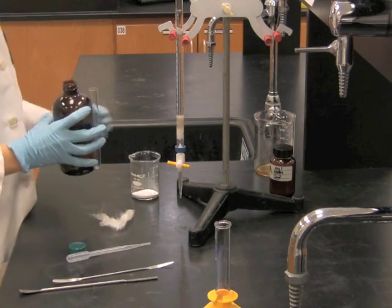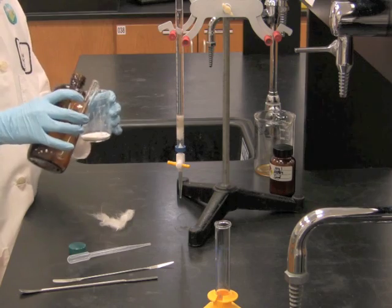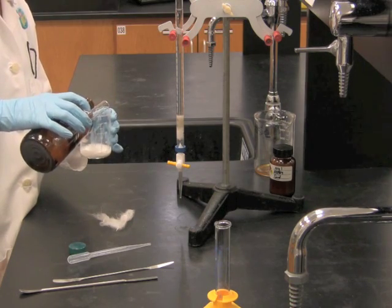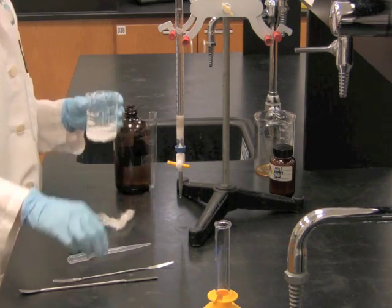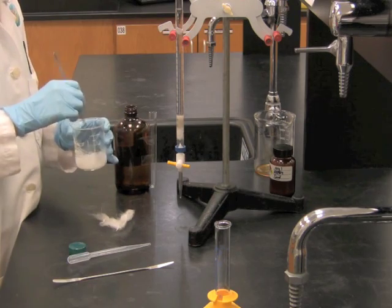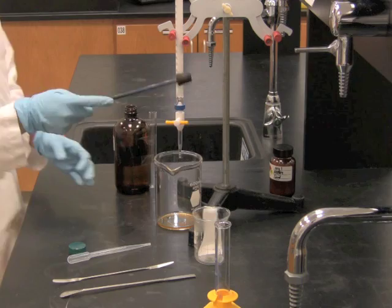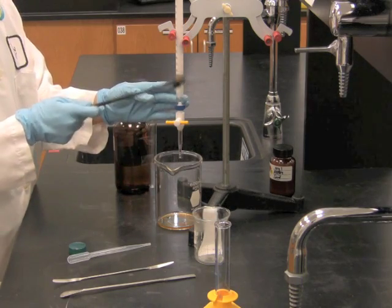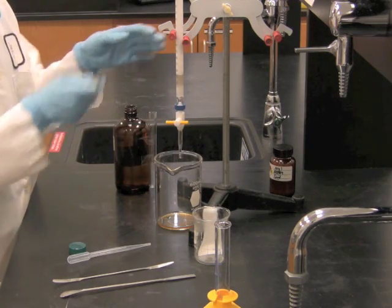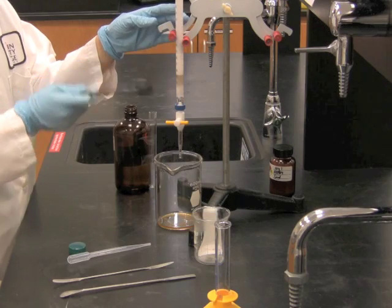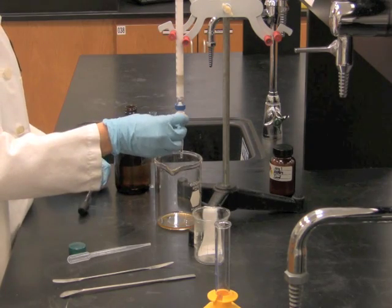And then I'm going to add the petroleum ether to the alumina to get it suspended as a slurry. You can also tap the column with a rubber stopper to make sure that the alumina is distributing evenly.